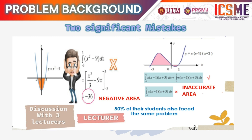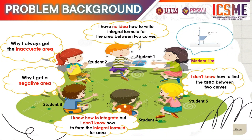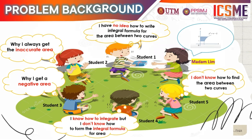In our conversations, we found that there were two significant mistakes that students often make: the case of negative area and the case of inaccurate area. These mistakes have caused them to lose many marks in the matriculation program semester examinations. Interviews among students, as well as reviews of student homework, also show that many students have been facing the same problem in writing integral formulas of area between two curves.